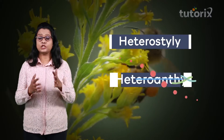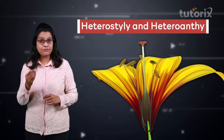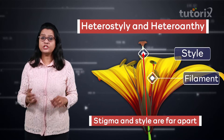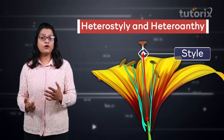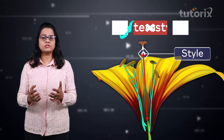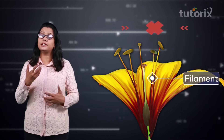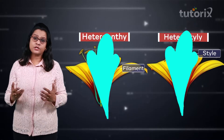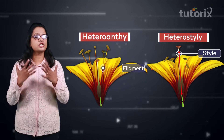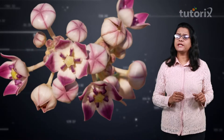The next adaptation is heterostyly and heteroanthy, which means there is a difference in the length of the filament and the style in a flower, making it difficult for them to come close. If the difference is in the length of the styles, that is called heterostyly. If the difference is in the length of the filaments of the anther, it is called heteroanthy. Because of this difference in length, they cannot come close, and thus cross-pollination is favored.